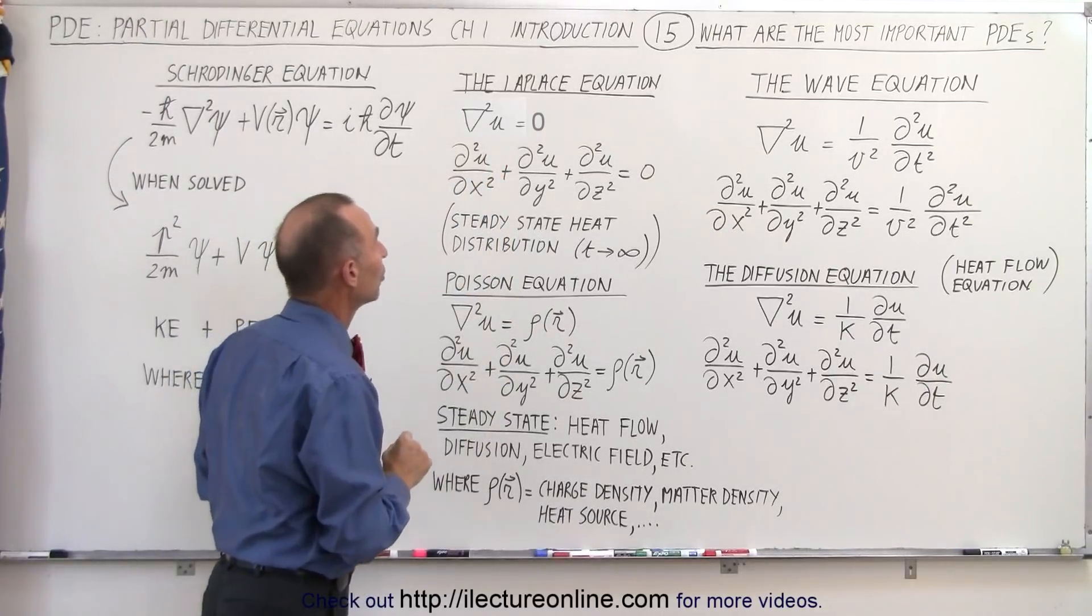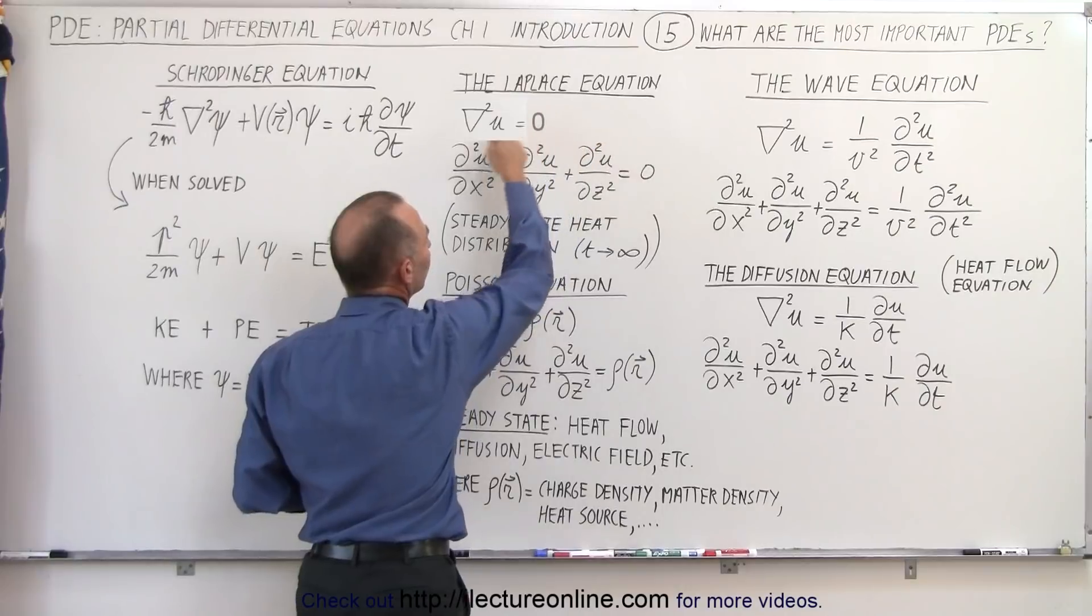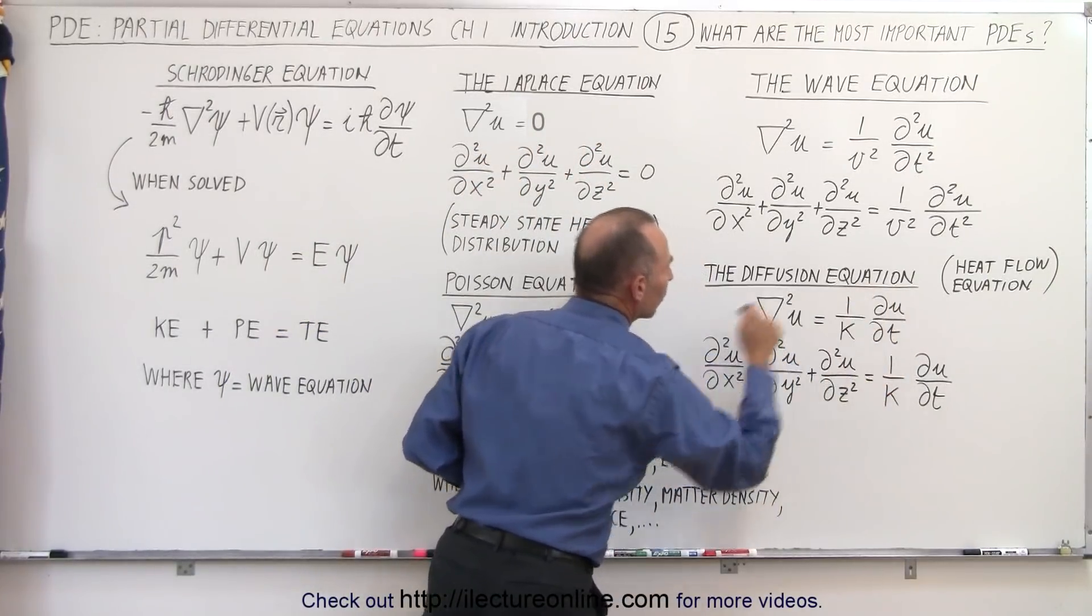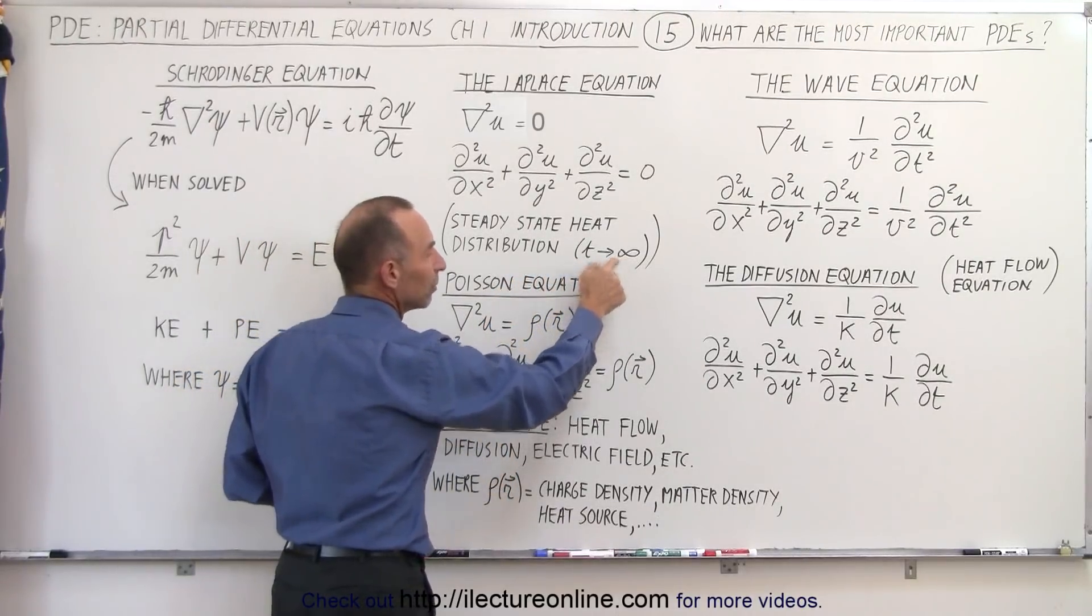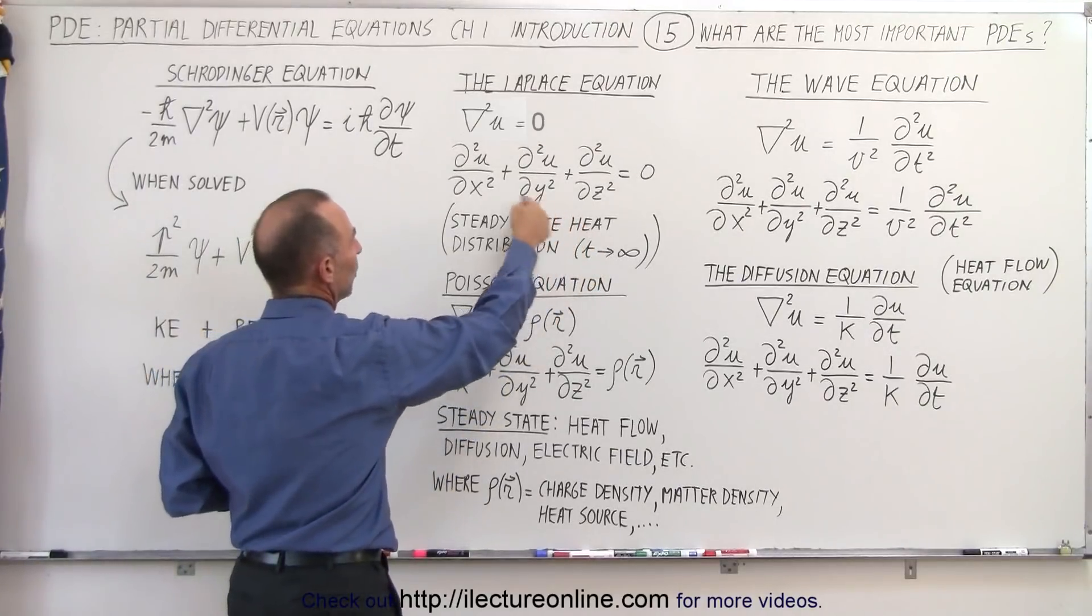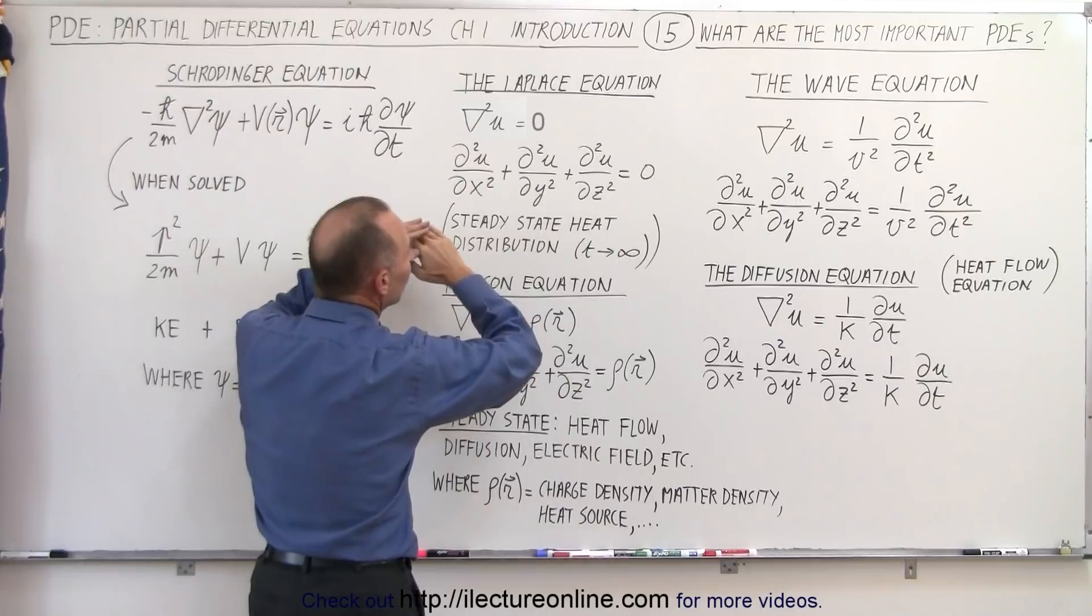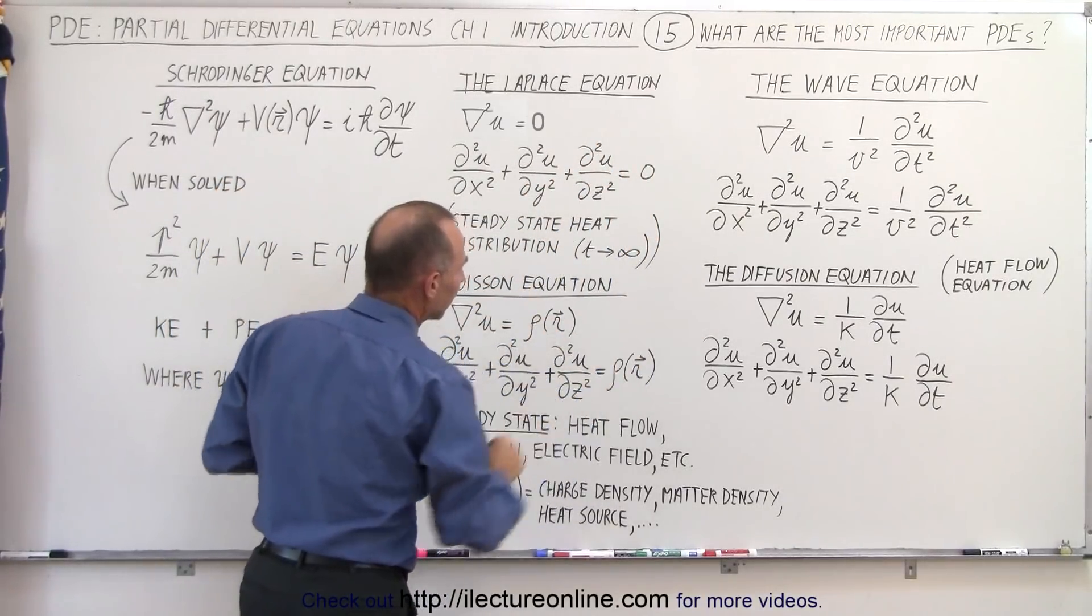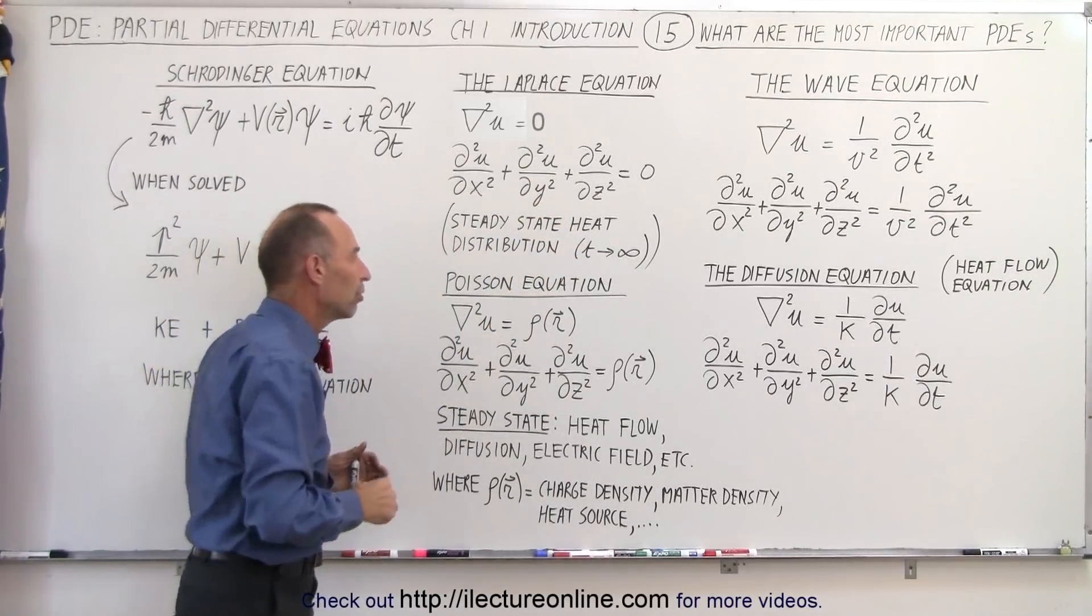When we get to the Laplace equation, notice on the right side we now have a zero. So this is really the same thing as the diffusion equation but with a zero on the right side, which means we now allow time to go out to infinity. Well, not exactly to infinity, but for a very long time in such a way that we've reached the steady state. Once we reach steady state, we want to see what the heat distribution is over the area, over the volume, or over the length of the line. And so that can be done using the Laplace equation.